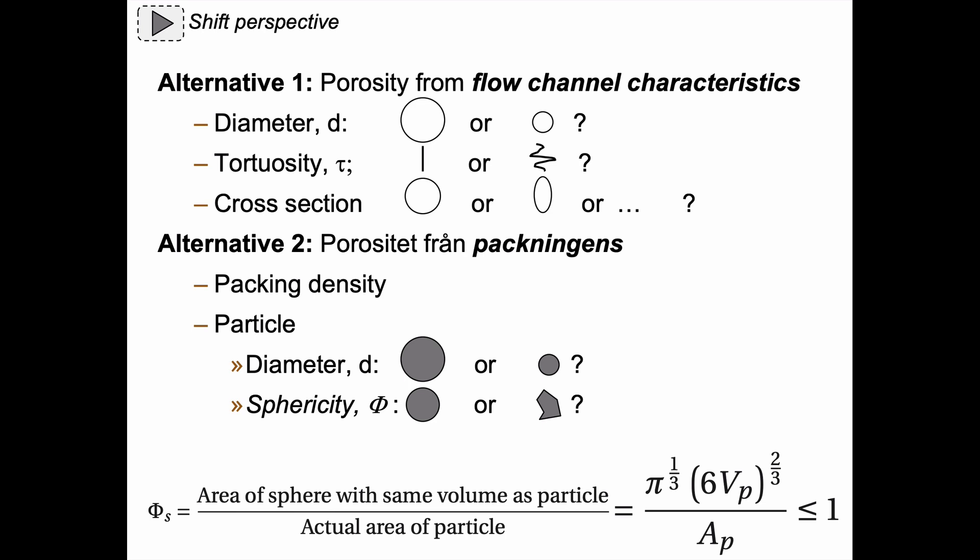So then we can think of the flow channel characteristics, the diameter of the channel. Is it a big area, a big diameter or a small diameter? Is the channel straight?